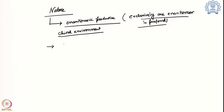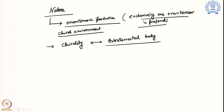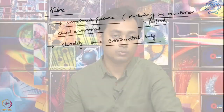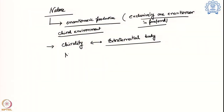One idea is that this chirality may have been triggered by an extraterrestrial body — meaning this chirality is not from the earth itself but actually came from outside the world. Is there any proof? One of the proofs we are going to discuss today is known as the Murchison meteorite.